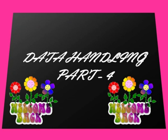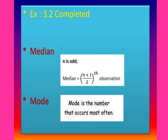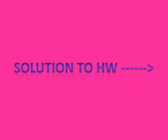Hello students, welcome back to the next session on data handling. Let us recall what we had discussed in the previous video. In the previous video we had completed exercise 3.2, which is fully based on two concepts. First one is median: if n is odd then median is equal to (n+1)/2 th observation. The next concept is mode — mode is the number that occurs most often.